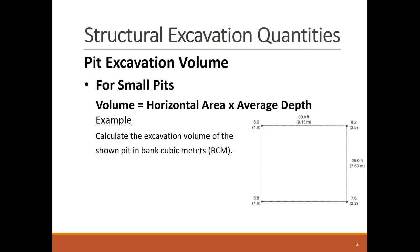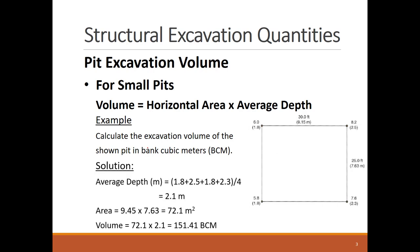You will need to calculate the average depth, which turns out to be 2.1 meters. Then the area is calculated to be 72.1 square meters. When multiplying these two values, the excavation volume is 151.41 bank cubic meters. This simple calculation is best used for small excavation pits where the depth changes linearly between the pit corners.